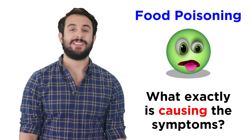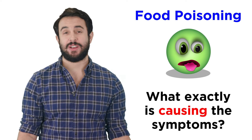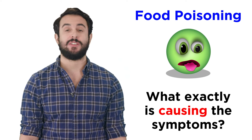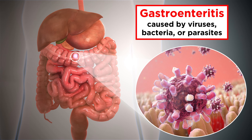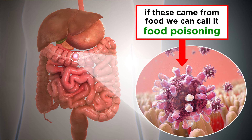When it comes to stomach trouble, it's not always easy to identify what in particular is causing the symptoms. The term gastroenteritis refers to inflammation of the lining of the gut, particularly the stomach and intestines, and cases of gastroenteritis can be caused by viruses, bacteria, or parasites. When it's clear, or at least likely, that the source of an infection is contaminated food, we call it food poisoning. Let's go in for a closer look.